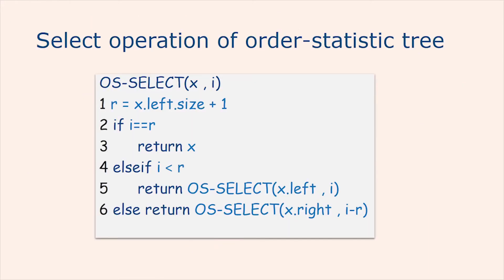Now we will see the select operation in an order statistic tree. Before we show how to maintain the size information during insertion and deletion, let us examine the implementation of two order statistic queries that use this additional information. We begin with an operation that retrieves an element with a given rank. The procedure OS-Select returns a pointer to the node containing the ith smallest key in the subtree rooted at x. To find the node with the ith smallest key in an order statistic tree T, we call OS-Select(T.root, i). You can see a pseudocode of the select operation in the slide.